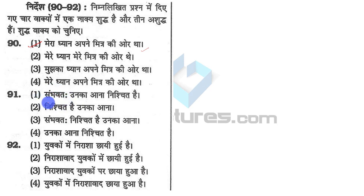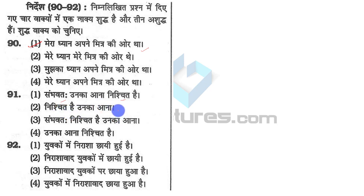'Sambhavata' means possibly. 'Nishchit hai unka ana' — you cannot use possibly and surety in the same sentence. Sambhavata means possibly, nishchit means sure or confirmed. We cannot use one word defining uncertainty and another defining certainty in a single sentence. 'Unka ana nishchit hai' — this is right. So the answer is option four.